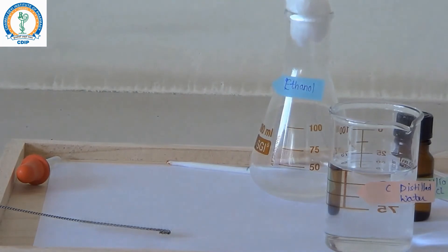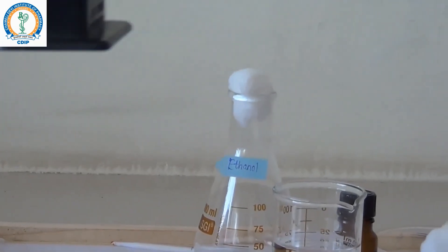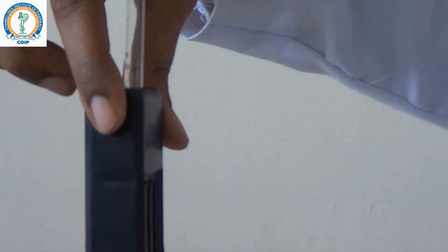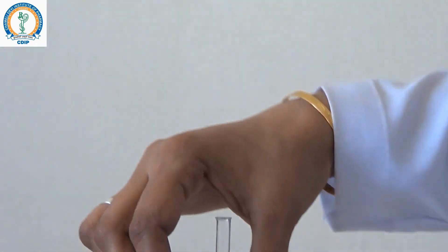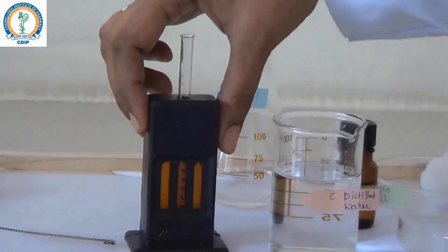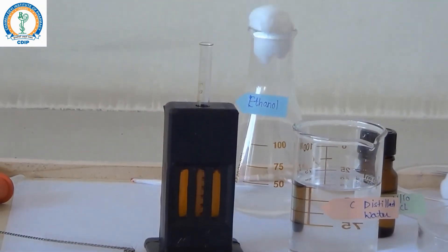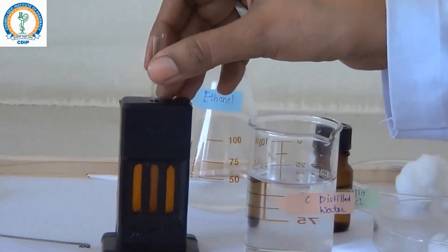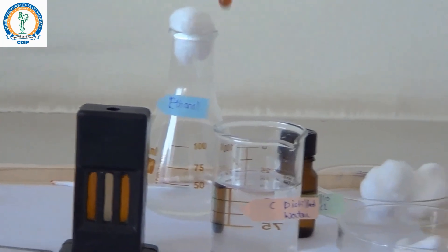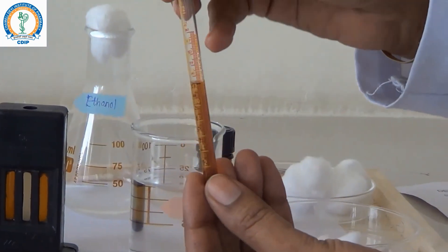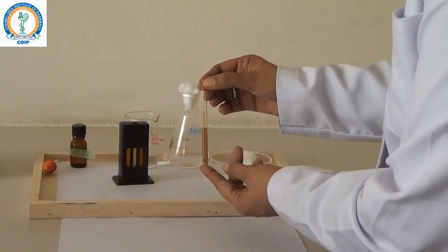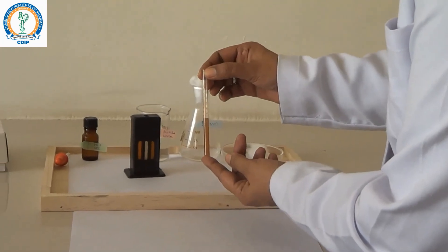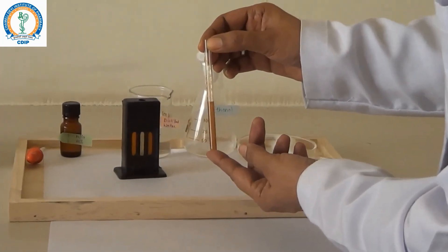Check the color comparison in the light so that it will give you the correct results. Now the tube matches with the comparators. Take out the tube for final reading. Hemoglobin content of the blood is 13 grams percent.